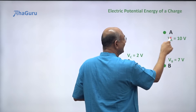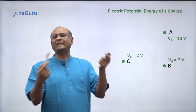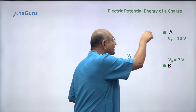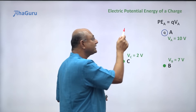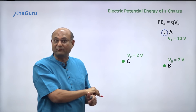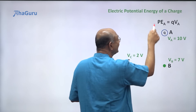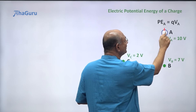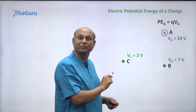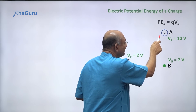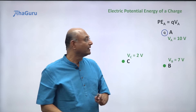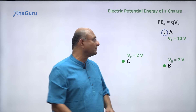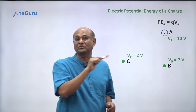The potential at A is 10 volts — what does that tell us? As such, it doesn't tell us anything on its own. But if I go and put a charge Q there, it tells us the potential energy the charge will get. The potential energy at A for a charge sitting there is Q times VA — the charge value multiplied by the potential at A. If the charge is at B, the potential energy is Q times VB.